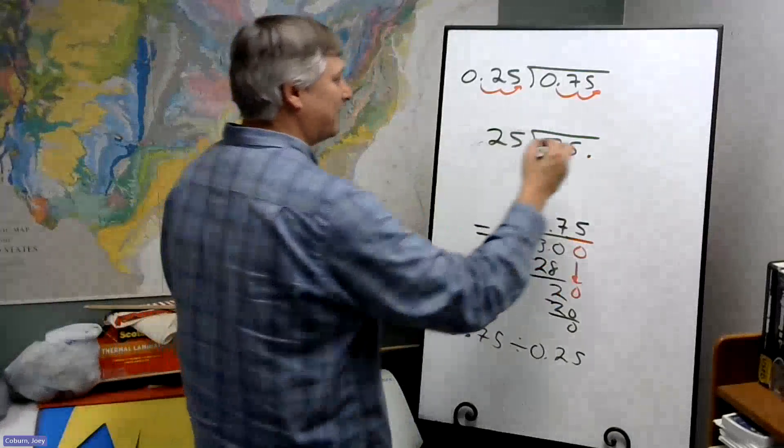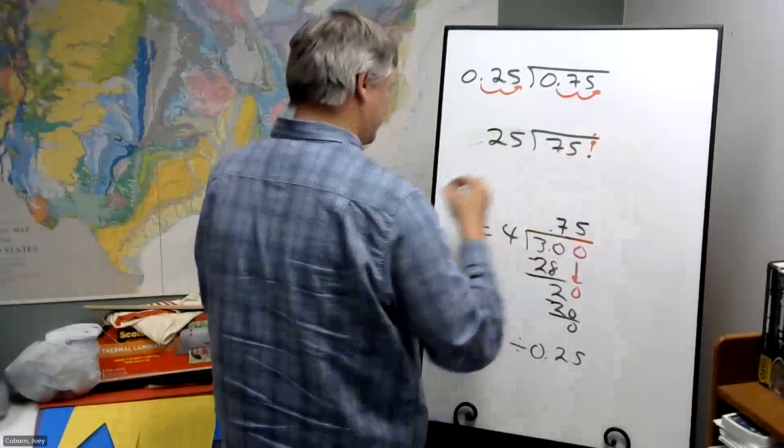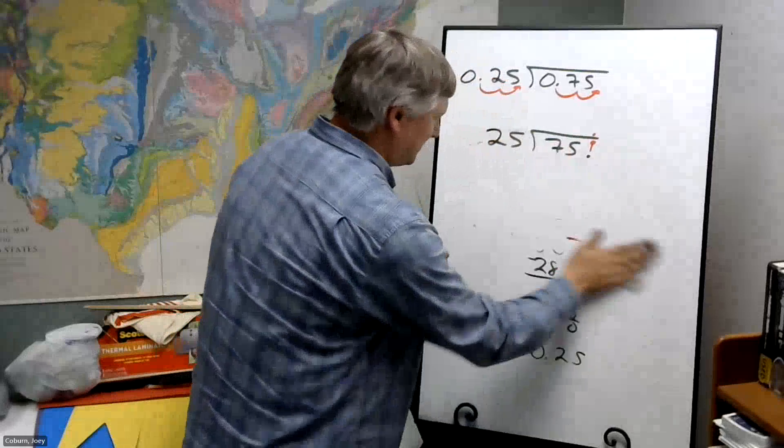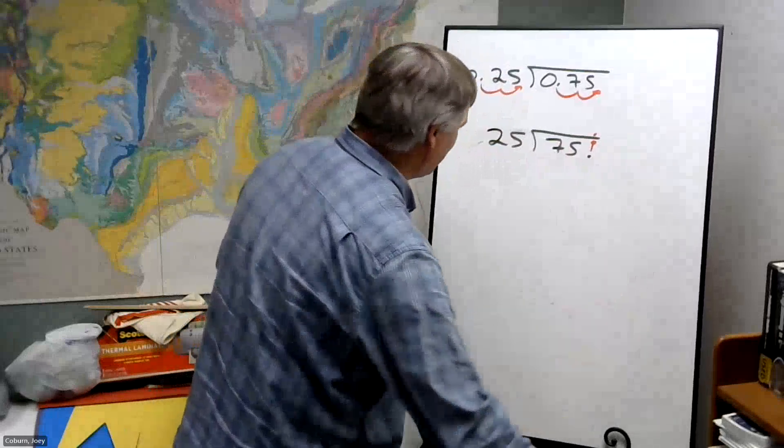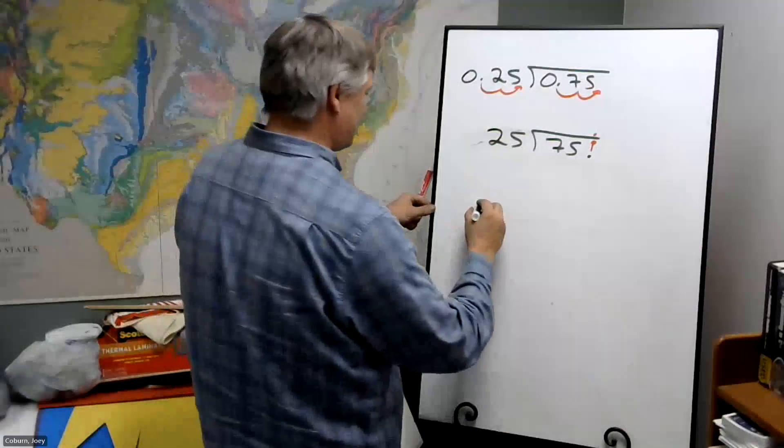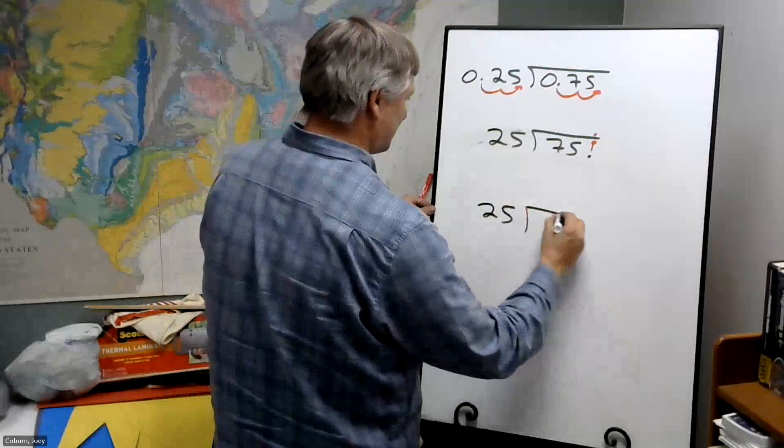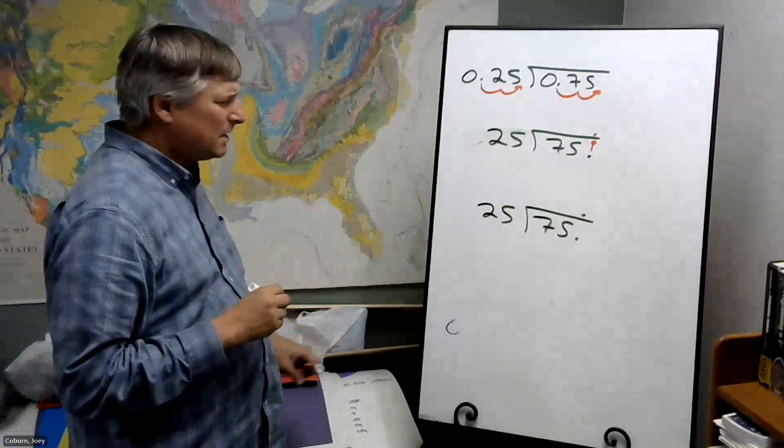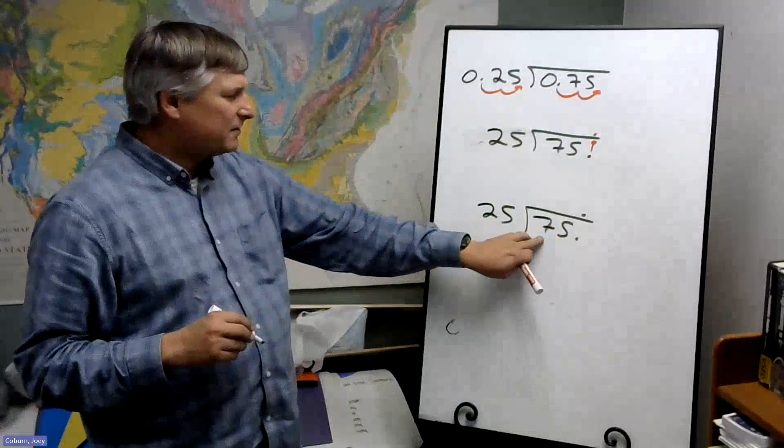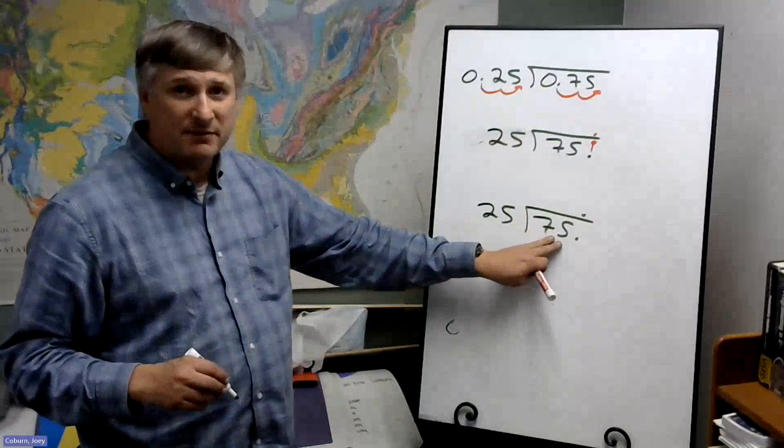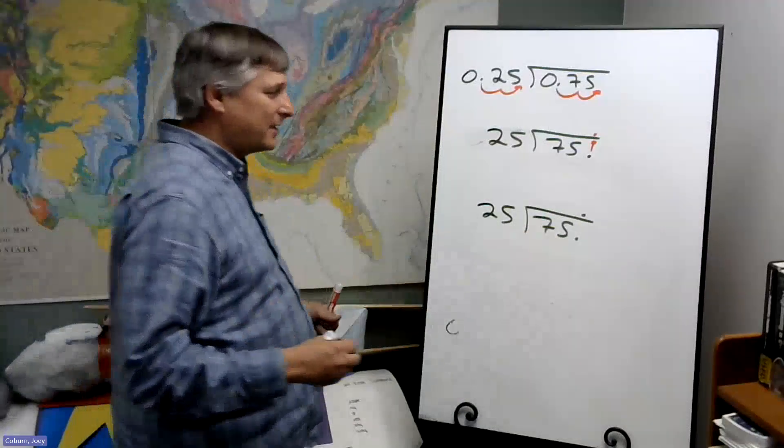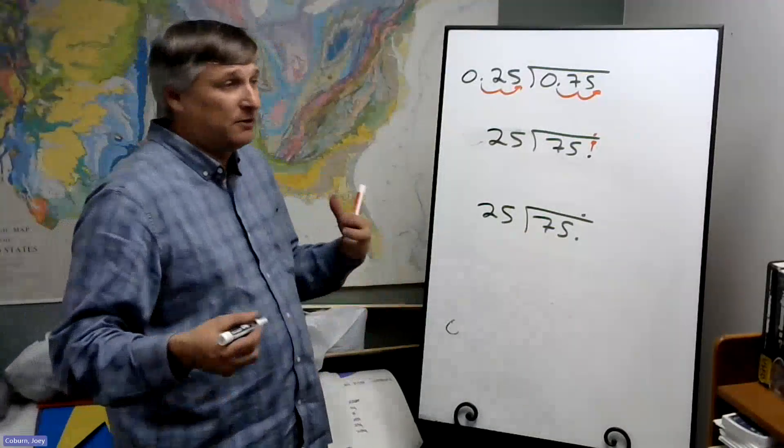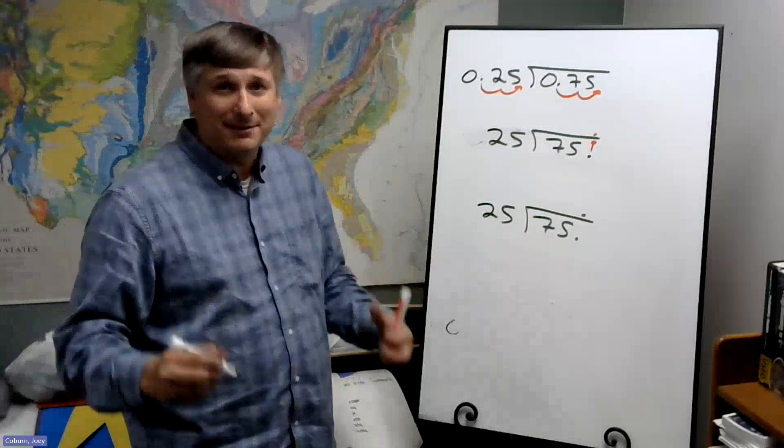Decimal, we'll copy it up above. And we're ready to divide. 25 won't go into 7, but 25 will go into 75, so we place that answer, happens to be 3. 25 goes into 75 three times.